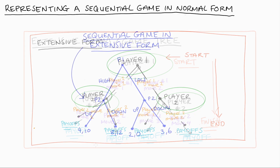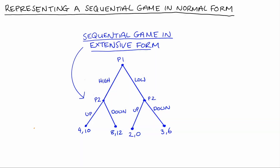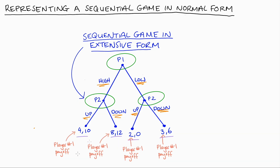Our tree here tells us that we have Player 1 (P1) who moves first — they can either play high or low — and Player 2 (P2) who sees Player 1's move and can respond by either playing up or down. The payoffs associated with each possible outcome are at the terminal nodes, with Player 1's payoff listed first and then Player 2's.